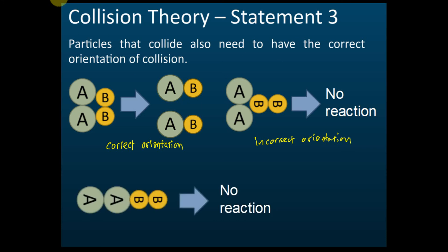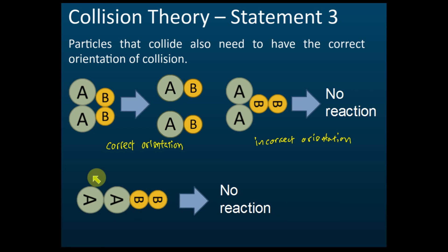Here is another example: A collides with B in this way and there is still no reaction, because this is also an incorrect orientation. Only when A and B collide in the correct orientation can the reaction occur. If they collide in these other orientations, there is no reaction.